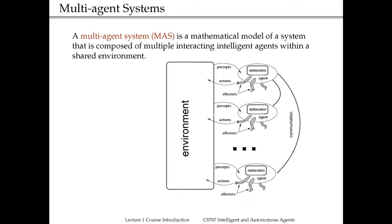There may also be a possibility of being able to communicate with other agents. Through this interaction, agents may learn from each other and improve their performance. This brings a whole extra level of complexity that is not covered in the single agent case.